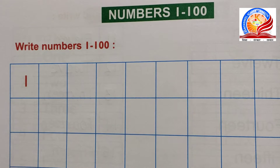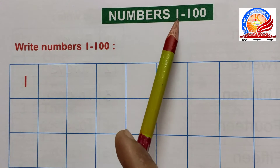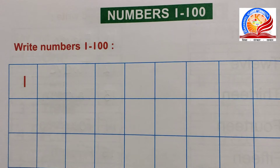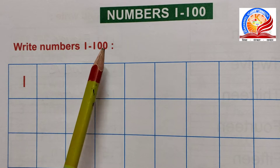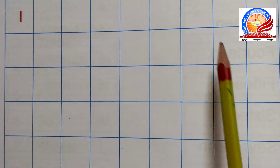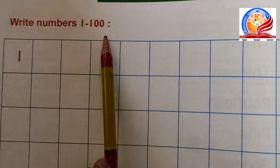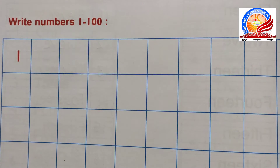Good morning students, welcome to class KG 2nd. Aaj hum padhenge maths mein Numbers 1 to 100. So let's start. Come to page number 22 - write numbers 1 to 100. Humein yahan par kuch boxes diye gaye hain, in boxes mein 1 se lekar 100 tak counting likhna hai. Yeh aapko bol bol kar likhna hai - yeh aapka HW hai.